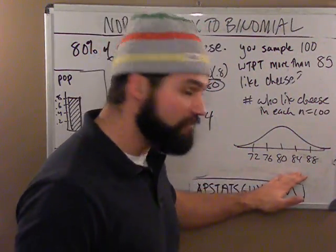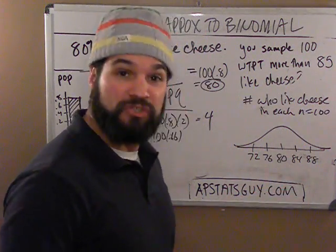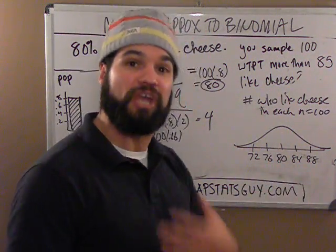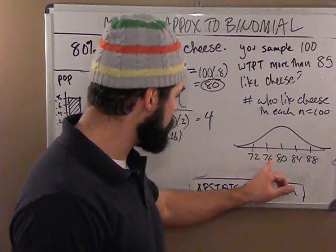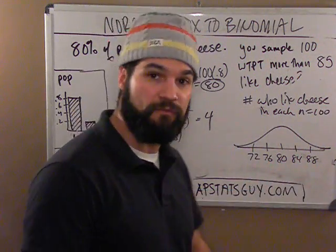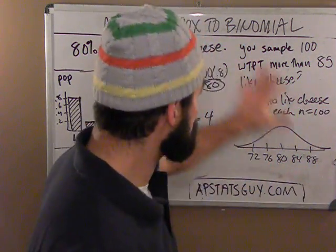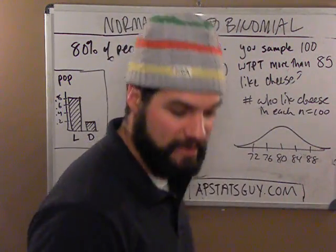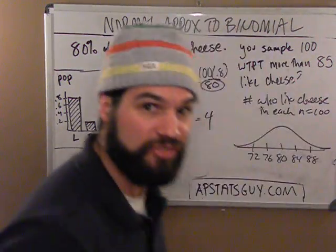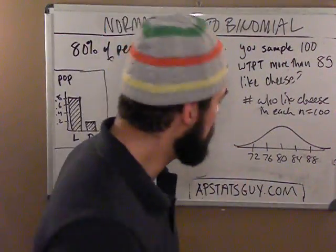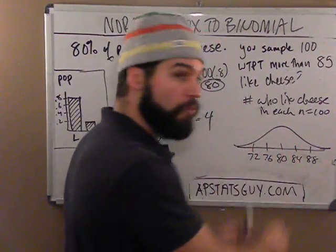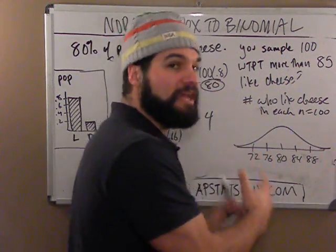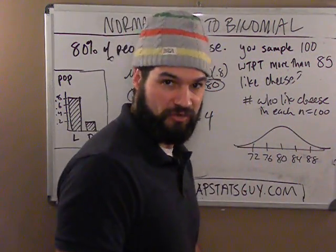This model looks an awful lot like the other one where we said 68% of the time between 76% and 84% will like cheese — now we're saying between 76 and 84 people will like cheese. Notice that it's the same thing. You can use either one: a model for the number of successes, or a model for the percent of successes in a random sample.